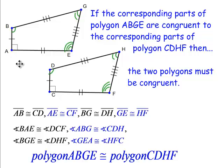Angle A has to be congruent to angle E. Angle B is congruent to angle D. Angle G is congruent to angle H, and angle E is congruent to angle F. And also the corresponding sides are congruent. AB is congruent to CD, BG is congruent to DH, GE is congruent to HF, and AE is congruent to CF.